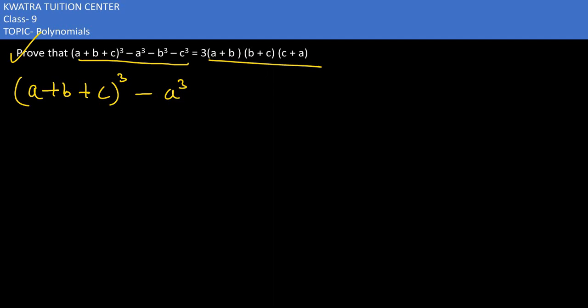In the first one, you are given with a plus b plus c whole cube. Then the second value you are given with a cube minus b cube then minus c cube.